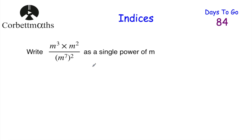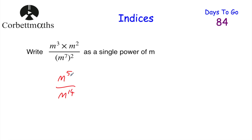Here's an exam question: write (m³ × m²) ÷ (m⁷)² as a single power of m. First the numerator: m³ × m² — same base, add powers — m⁵. Then the denominator: (m⁷)² is a power of a power, multiply powers: 7 × 2 = 14, so m¹⁴. Now m⁵ ÷ m¹⁴ — subtract powers: 5 − 14 = −9. The answer is m to the power of negative 9.